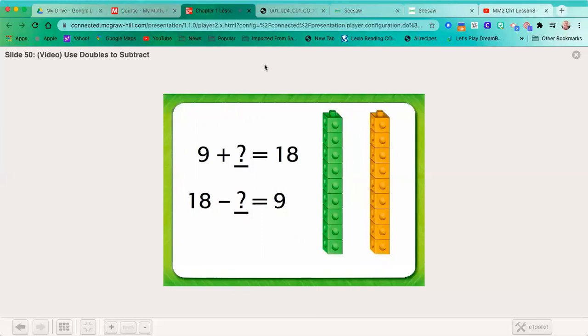Is that a doubles fact? Yes, it is. Nine plus nine equals 18. Let's use that doubles fact for this subtraction problem. 18 minus nine equals nine.